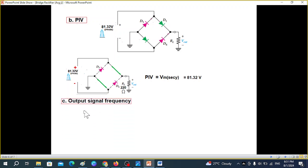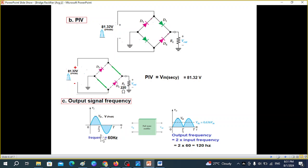Now part C is easy, output signal frequency. From here, you can see this is one hertz, but here we have two cycles or two hertz. We can say that the output frequency will be two times the input frequency. And input frequency in the question is given to be 60 hertz. Therefore, the output frequency will be two into 60, that is 120 hertz.